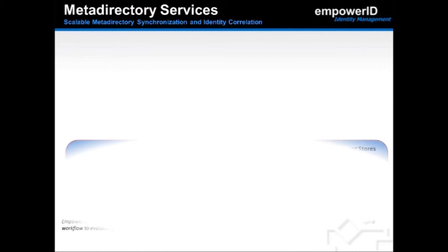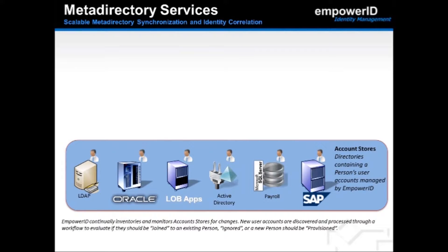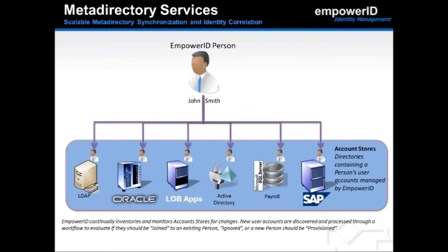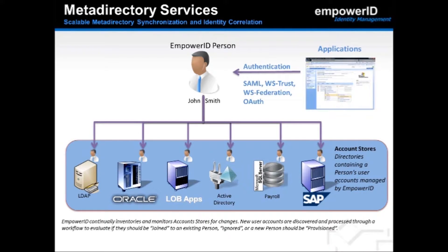At the heart of our identity management platform is our Enterprise Meta Directory, which continually inventories and monitors account stores for changes. New user accounts are discovered and processed to evaluate if they should be joined to an existing person, ignored, or have a new person provisioned. Through the relationship created by joining account identities to the master person identity, users can authenticate through EmpowerID into external applications using most federation protocols such as SAML, WS-Trust, WS-Federation, and OAuth.